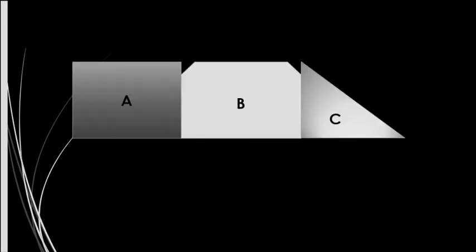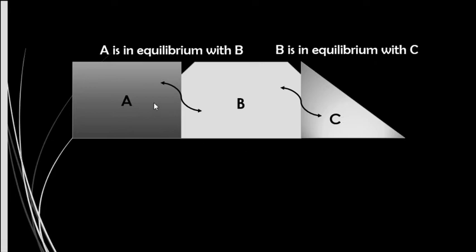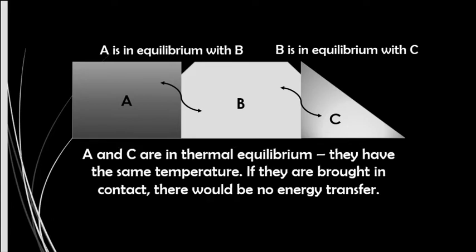Let us see the next example to describe thermal equilibrium. We have here three objects A, B, and C. Objects A and B are in contact with each other, and A is in equilibrium with B. Objects B and C are in contact with each other, and B is in equilibrium with C. So, even if A and C are not in contact with each other, we can say that A and C are in thermal equilibrium.